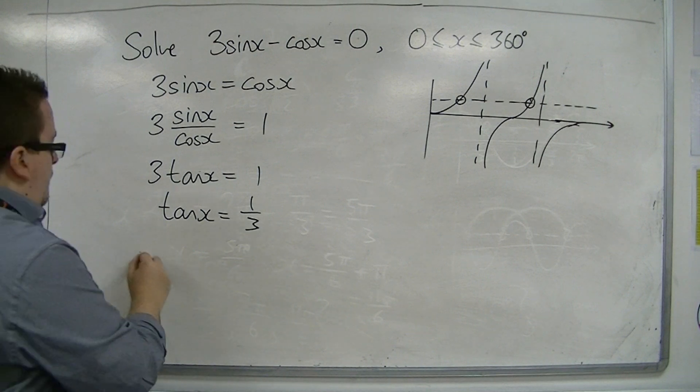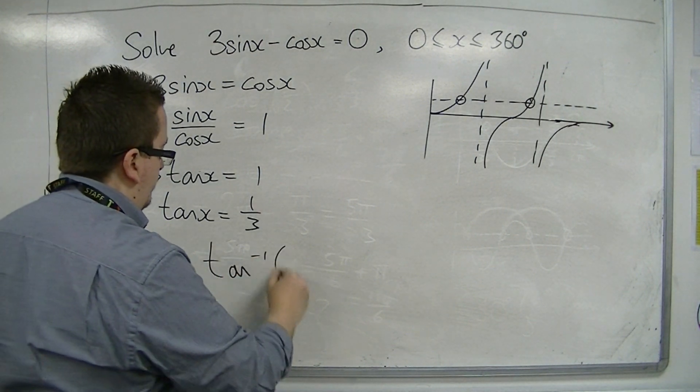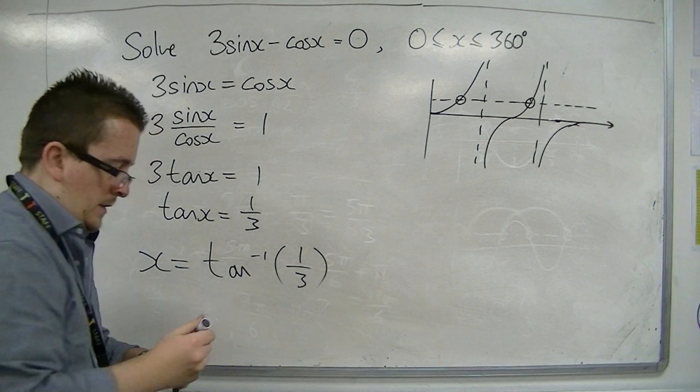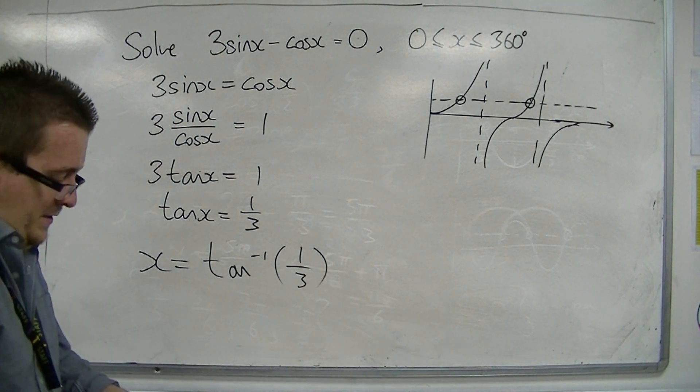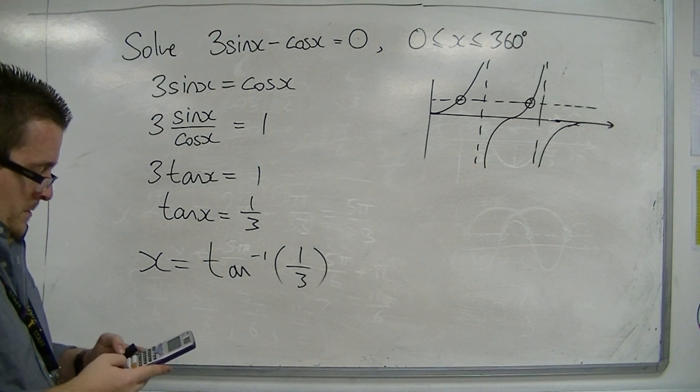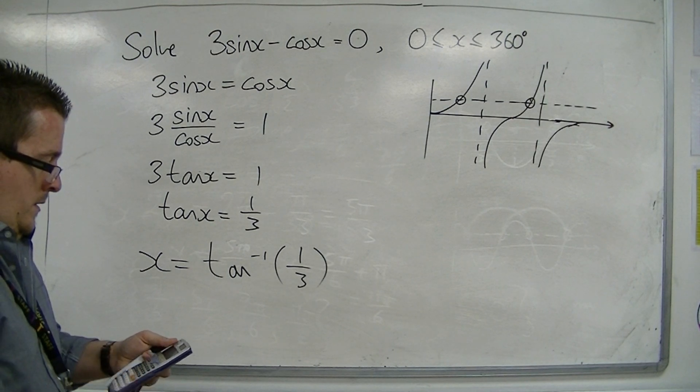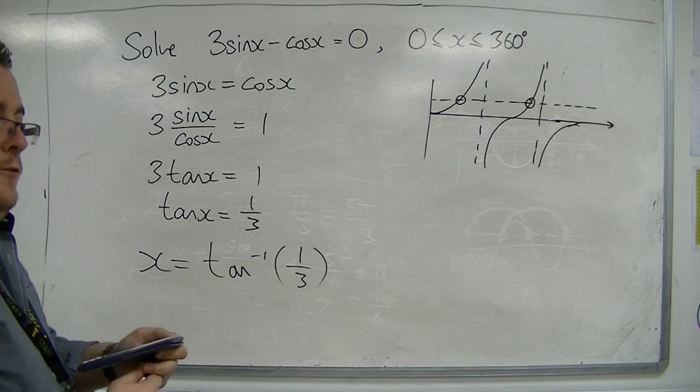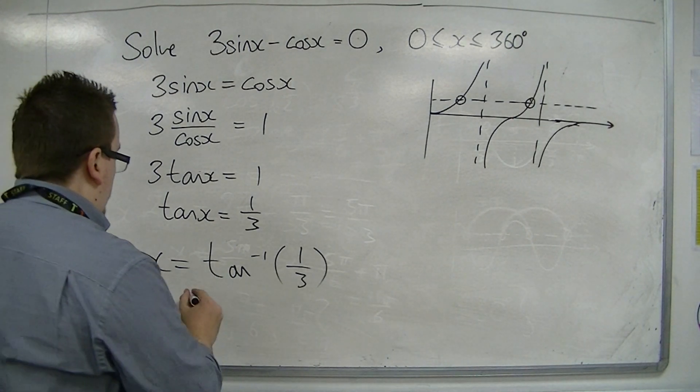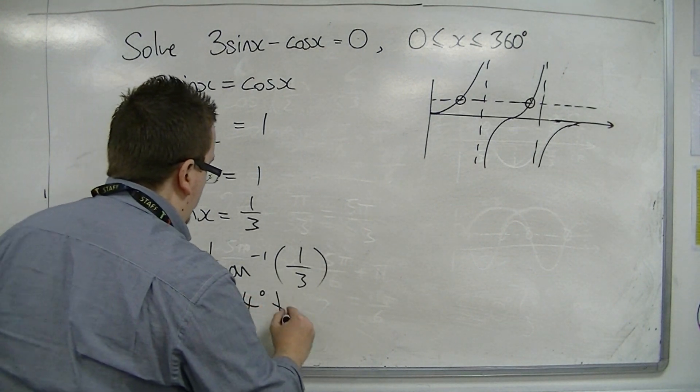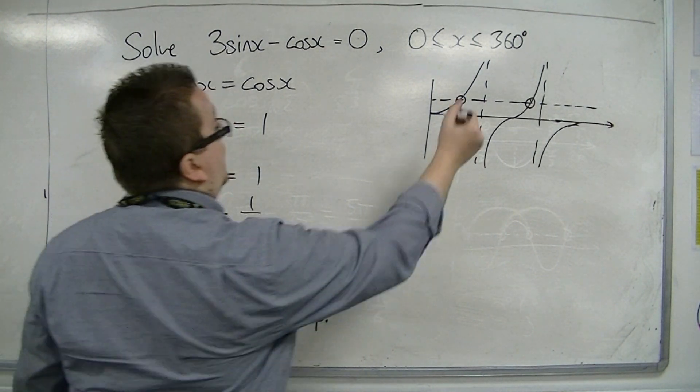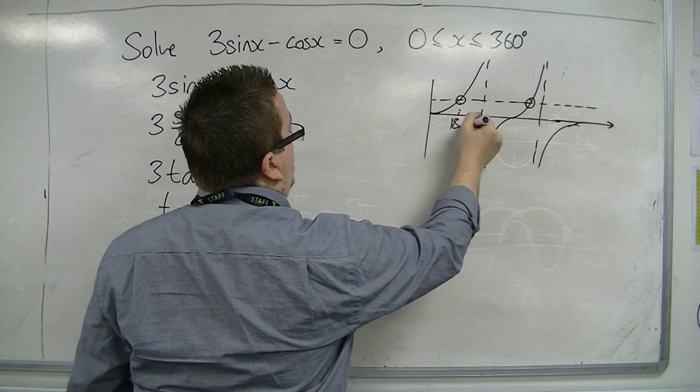So inverse tan both sides. So inverse tan of 1/3. 1/3 is 18.4 degrees to 1 decimal place. So that's giving me this solution. That's 18.4.